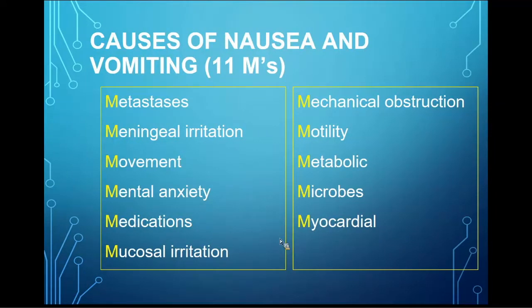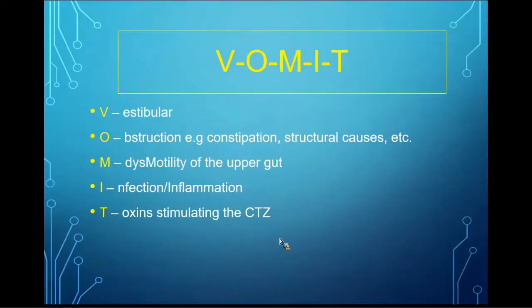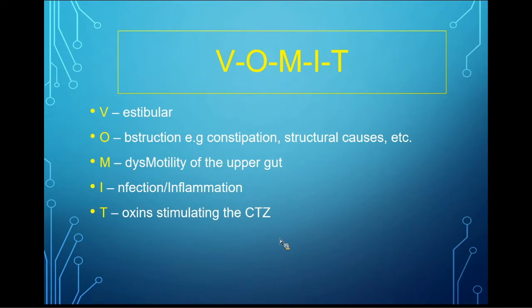When thinking about nausea and vomiting, there's a useful acronym: the '11 M's' — metastasis, meningeal irritation, mobility, anxiety, medications, mucosal irritation, mechanical obstruction, motility, metabolic issues, microbes, and myocardial. A more simplified acronym is VOMIT: V for vestibular, O for any obstructive process, M for motility, I for infection/inflammation, and T for toxin stimulating the chemoreceptor trigger zone — whether medications, chemical imbalances, or other neurotransmitters that are out of line.